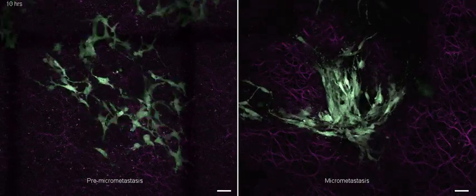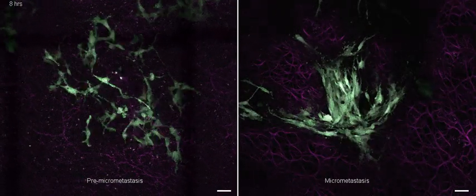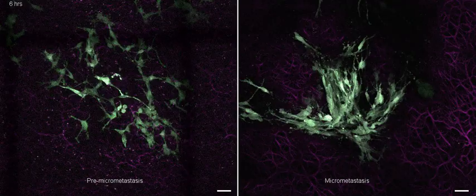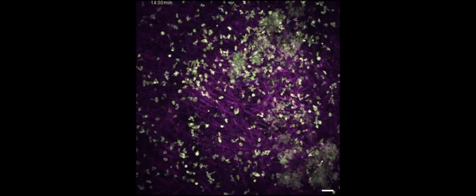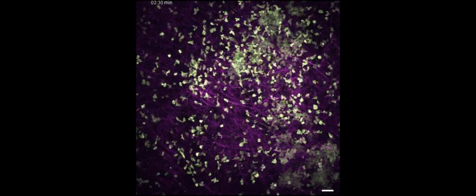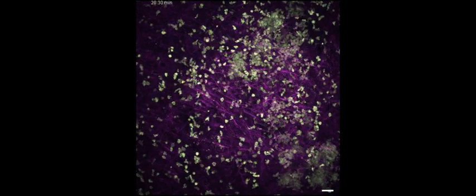If we block the motility in the pre-micrometastatic phase, these pre-micrometastases cannot grow into a micrometastasis. What you will see in movie four are T cells that are stimulated with OVA peptides.